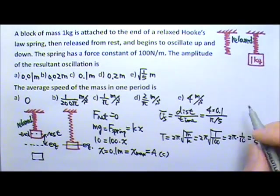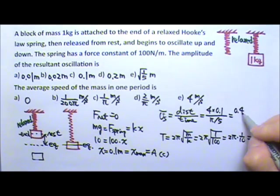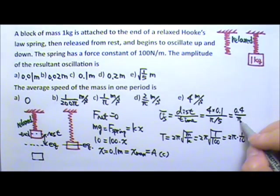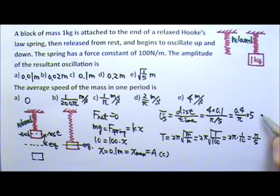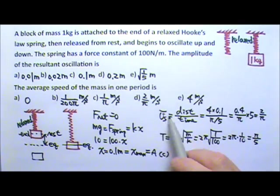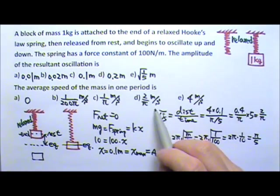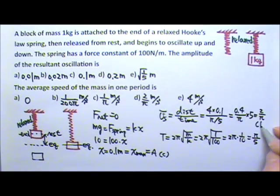So this gives us 0.4 divided by π times 5, which gives us 2/π. So the average speed is 2/π. The answer is D.